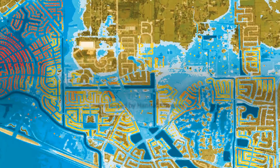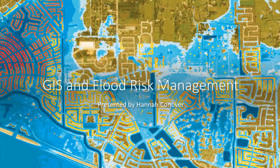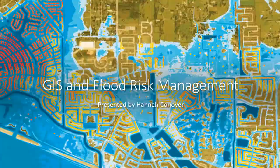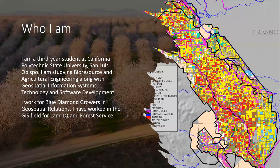Hello. This is GIS and flood risk management. I am a third year student at California Polytechnic State University in San Luis Obispo. I am studying bioresource and agricultural engineering along with geospatial information systems, technology, and software development. I currently work for Blue Diamond Growers in geospatial relations, and I have also worked in GIS for LandIQ and Forest Service.